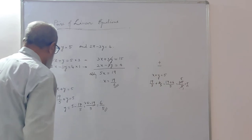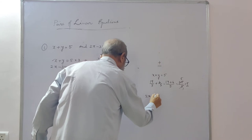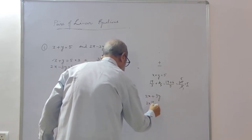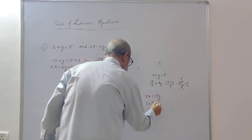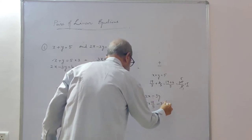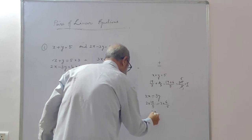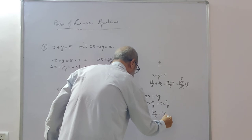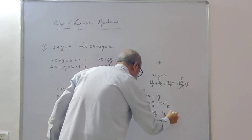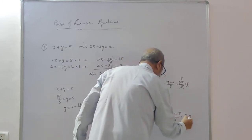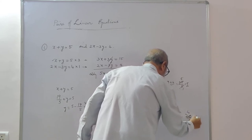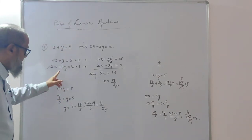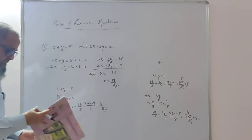Checking the second equation: 2x minus 3y = 2(19/5) minus 3(6/5) = 38/5 minus 18/5 = 20/5 = 4. This equation is also satisfied. No other values will satisfy both equations simultaneously. That completes the first problem.